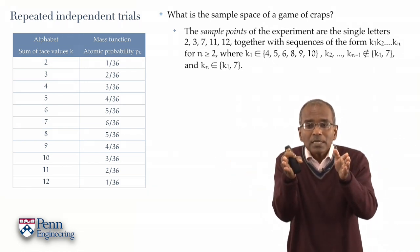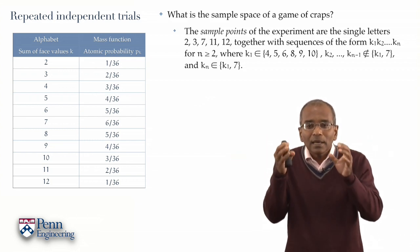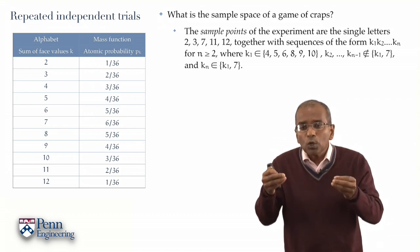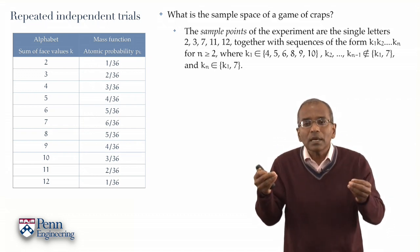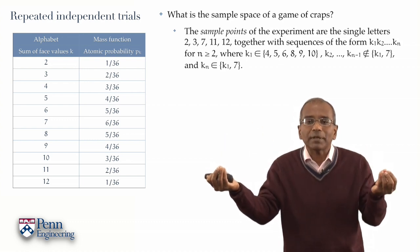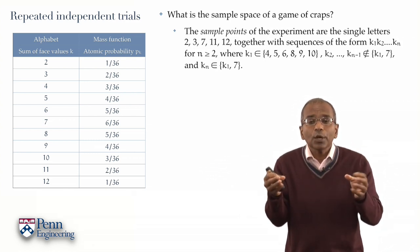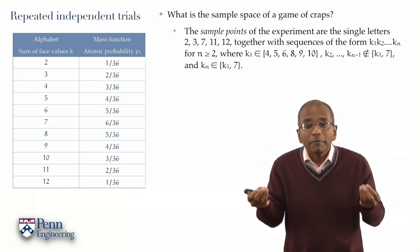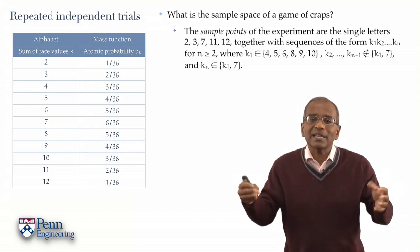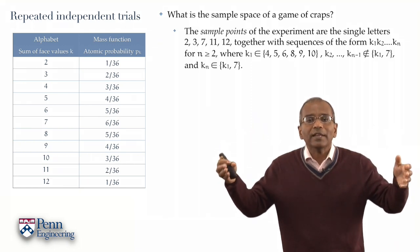The numbers which are sandwiched in between these bookend numbers, k₁ and k_n, the numbers k₂ through k_(n-1), have all to be any of the numbers, excepting the original number, k₁, or 7. All such sequences constitute valid, bona fide sample points of the experiment, and the sample space, then, is a collection of those single numbers, and all such valid sequences.